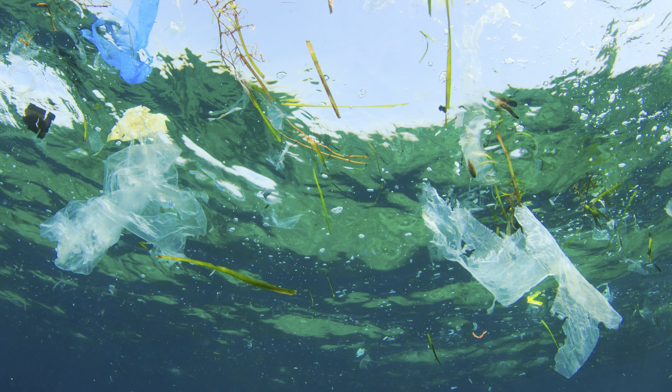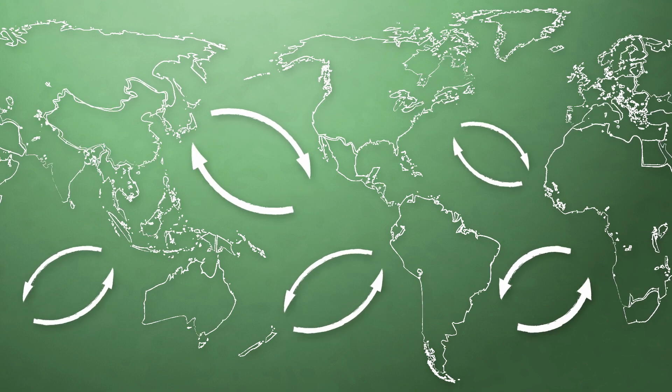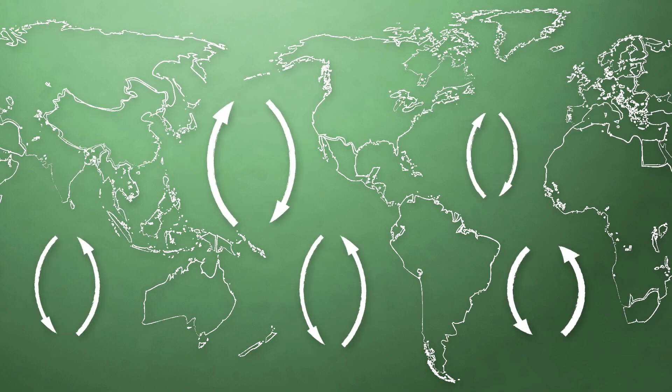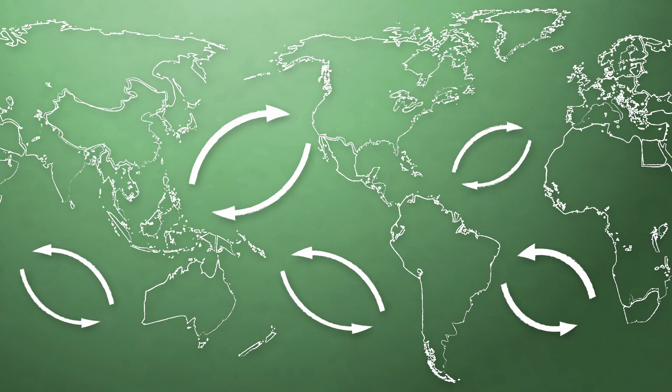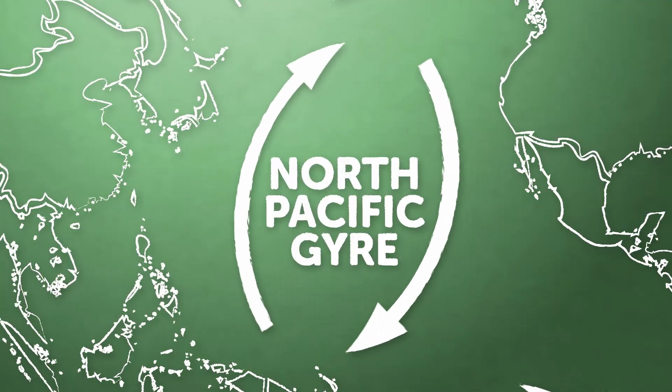See, the rotation of the earth and some of the global winds form what are called gyres. These are massive rotating ocean currents found around the world. But the bulk of the world's trash ends up in the North Pacific gyre, which is home to the Great Pacific Garbage Patch.